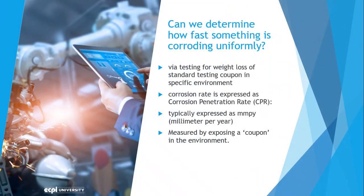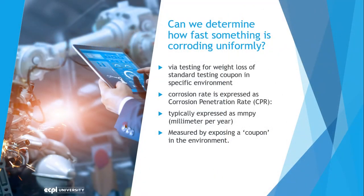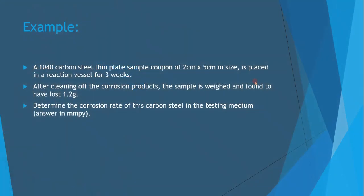We can determine how fast something corrodes uniformly by testing for weight loss of a standard testing coupon in a specific environment. The corrosion rate is expressed as corrosion penetration rate (CPR) in millimetres per year (MMPY). For example, a 1040 carbon steel thin plate sample of 2 cm by 5 cm is placed in a reaction vessel for 3 weeks. After cleaning off the corrosion products, the sample is found to have lost 1.2 grams.